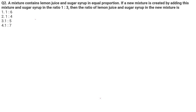Hi everyone, welcome to CAT Coach. We'll continue with our video series on solutions of CAT 2022 Slot 1 quant questions. The question on your screen is from mixtures and allegation. It says: a mixture contains lemon juice and sugar in equal proportion. If a new mixture is created by adding this mixture and sugar in the ratio 1:3, then what is the ratio of lemon juice and sugar in the new mixture?